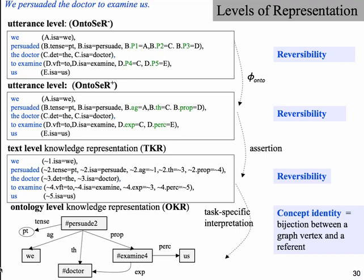The other type of representation is the text knowledge representation — a discourse-level representation where you put all representations together. At this point, all variables become constants and can be concepts in the ontology. The last level is the knowledge representation or ontology-level representation that can be task-specific, where we have concept identity — a bijection between a graph vertex and a referent. For example, in terminological knowledge we can ignore determiners, or perform anaphora resolution: if I say 'John' and then 'he' later, they are matched and represented at the same vertex in the graph.